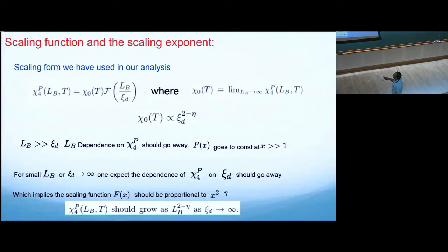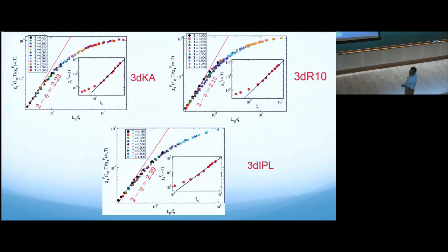We can try to ask these questions. This is the scaling function we used. Chi4 goes as chi0 which only depends on temperature, and the scaling function which depends on the block size divided by the length scale. As the argument of the scaling function goes to infinity it should go to 1 because it saturates. On the other hand, if lb is 1 and the scaling function goes to infinity, then if you calculate the susceptibility, it should depend only on the system size. If you put these are the exponents, then you can show that the scaling function f of x at small x should go like x to the power 2 minus eta. 2 minus eta is this anomalous dimension.